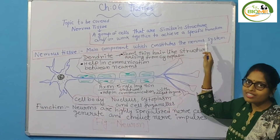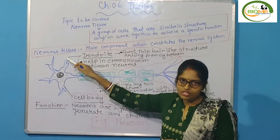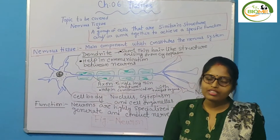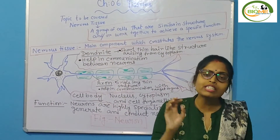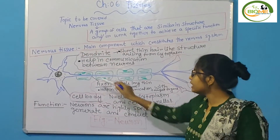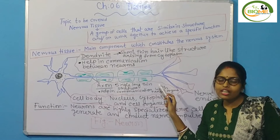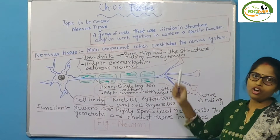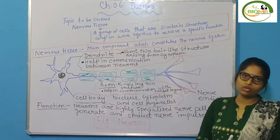So in the nervous system, which tissues are present? Nervous tissue. In the nervous tissue there is a structural and functional unit, and that is known as your neuron. The structural and functional element of the nervous system is your neuron.